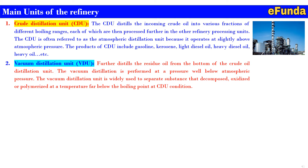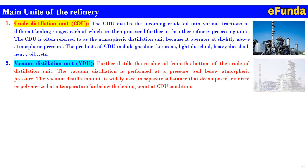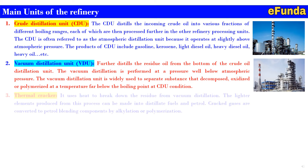Second is the Vacuum Distillation Unit, or VDU, which further distills the residue oil from the bottom of the crude oil distillation unit. The VDU operates at a pressure well below atmospheric pressure and is widely used to separate substances that decompose, oxidize, or polymerize at temperatures far below the boiling point at CDU conditions. Third is thermal cracking, which uses heat to break down the residue from vacuum distillation, producing lighter elements that can be made into distillate fuel and petrol. Cracked gases go for conversion to petrol blending components such as alkylation or polymerization.